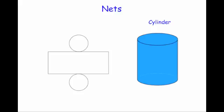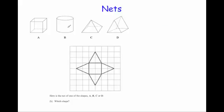Let's have a look at some typical exam questions. You've got a cube, a cylinder, a square base pyramid and a triangular prism, and it says here's the net for one of the shapes A, B, C or D — which shape? Well, clearly you can see this is a square base pyramid. You've got your square base and then you've got your four triangles which would fold up. So that would obviously be C, because C is the square base pyramid.